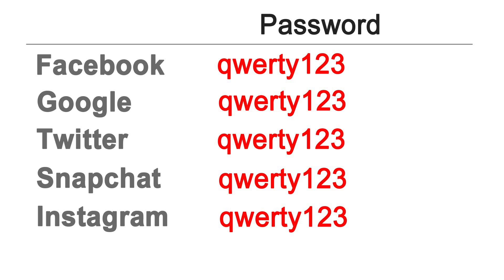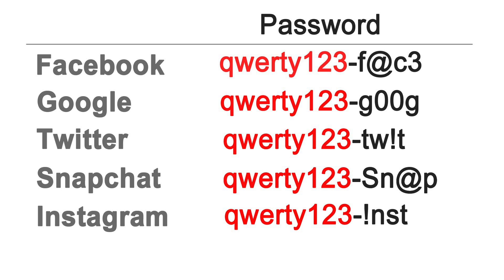A second way to fix this problem is to use a different postfix for each password. This way, you can choose one base password which will be the same for each website and then add a unique word after every password — a pretty common technique for advanced users. In fact, I used the same for the past 2 years. But trust me, once your list keeps increasing, this technique will also fail. Been there and done that.